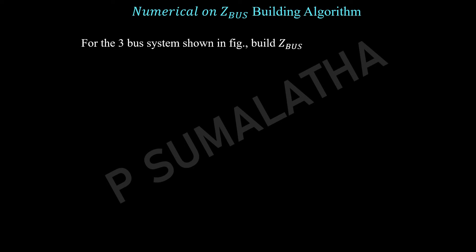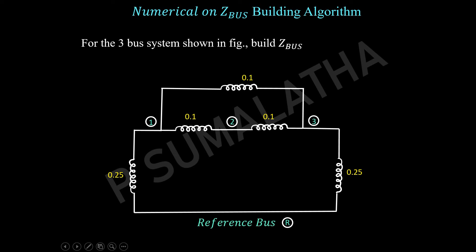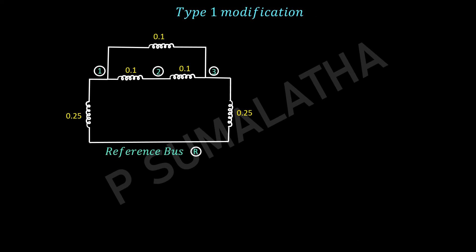In this session we are going to see a numerical on the Z-bus building algorithm. Let us consider a three-bus system — we have three buses and one reference bus. We have several branches connected between the buses and we have to form the Z-bus matrix. I am going to consider the given matrix and add one element between the nodes to form the Z-bus matrix corresponding to that particular element. In this way we will progress through all the elements in the network and finally get the Z-bus matrix for the given network.